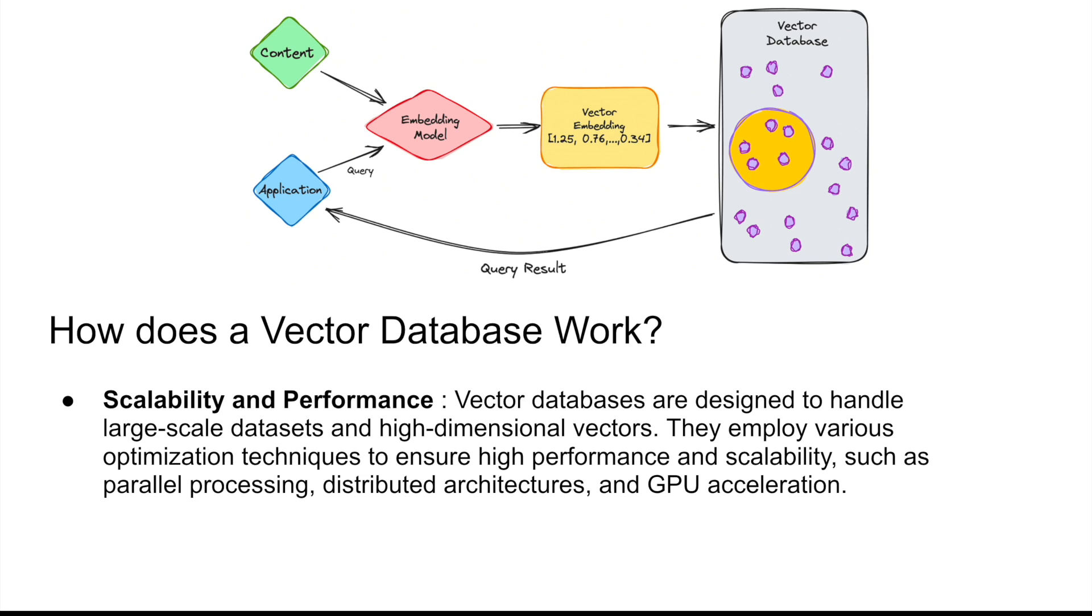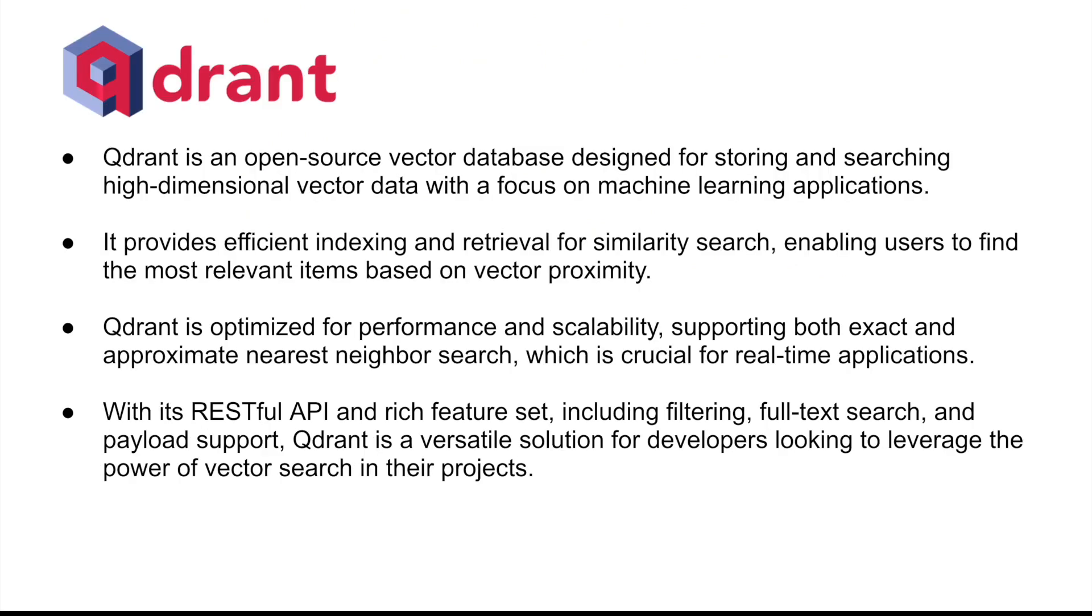Here is where now I will introduce you to an amazing vector database called as Quadrant. Quadrant is basically an open source vector database designed for storing and searching high dimensional vector data with a focus on machine learning applications. It provides efficient indexing and retrieval for similarity search. You can basically configure a lot of things in Quadrant based on how you want to perform similarity search, etc. Thus, it basically enables user to find the most relevant items based on vector proximity.